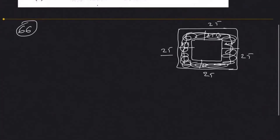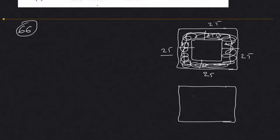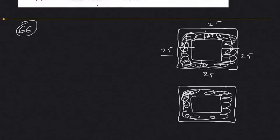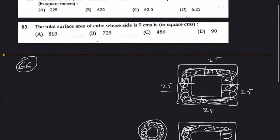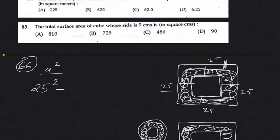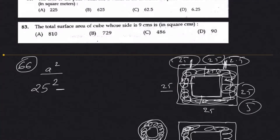To understand this, imagine you take a piece of square paper and cut little portions from each length. You'll see that from the bigger square you have to subtract the smaller square. The area of a square formula is side squared. So the answer is 25 squared minus the inner square. The inner side is 25 minus 2.5 minus 2.5, which equals 20. So: 625 minus 400 gives you 225.